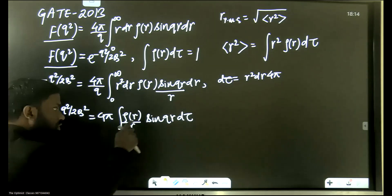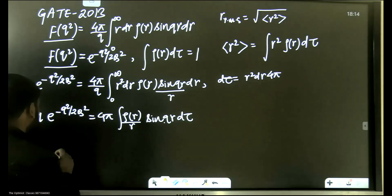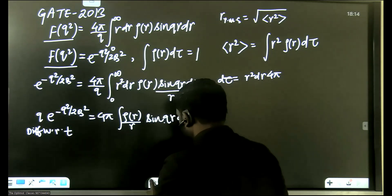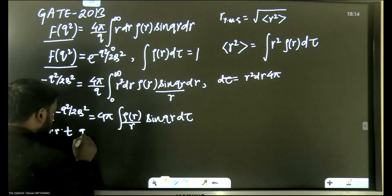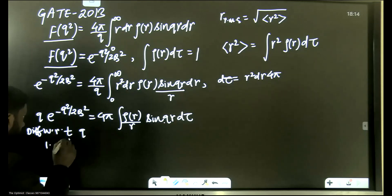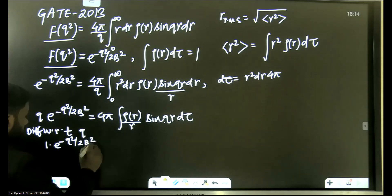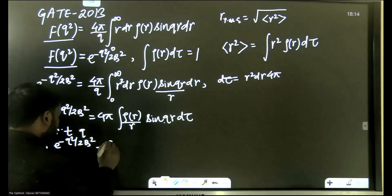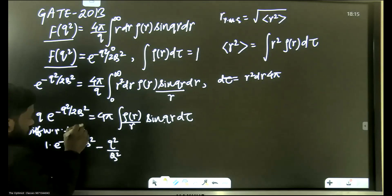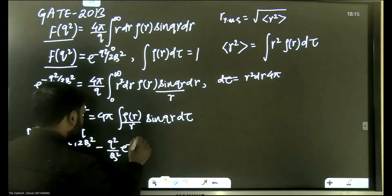Let's differentiate both sides with respect to q. When we differentiate inside the integral with respect to q, since q appears as a coefficient of r, the factor of r will come out. Differentiating twice will bring out r². Differentiating the left-hand side gives e^(−q²/2Q²), and differentiating the exponential term gives a factor of −q/Q².